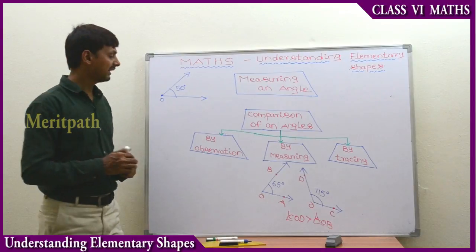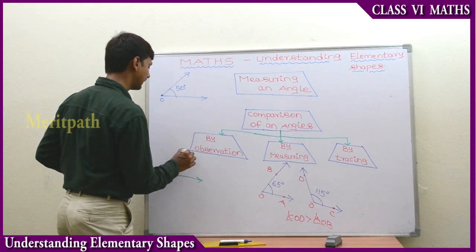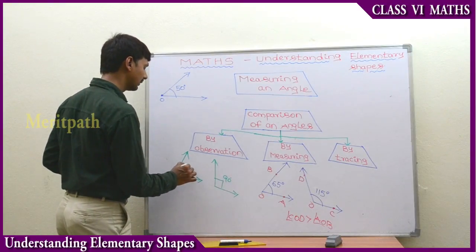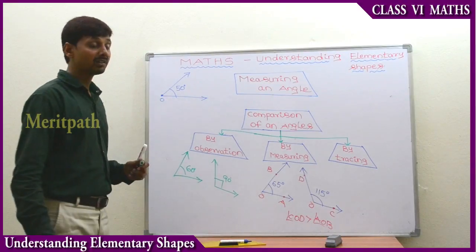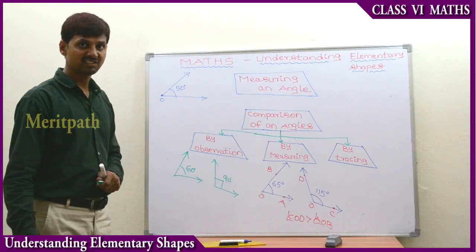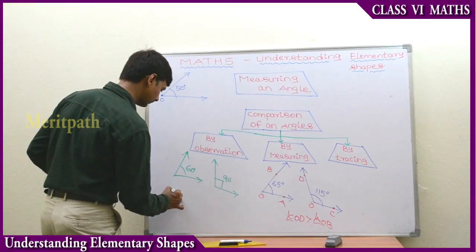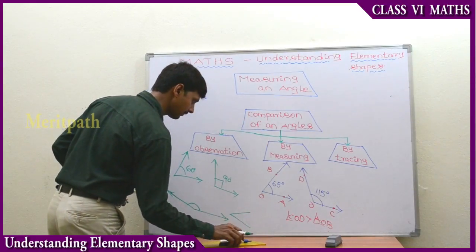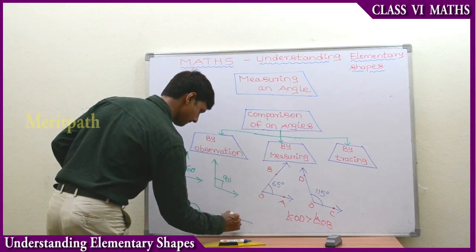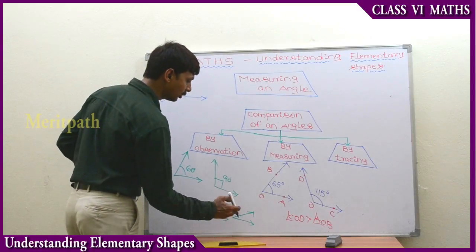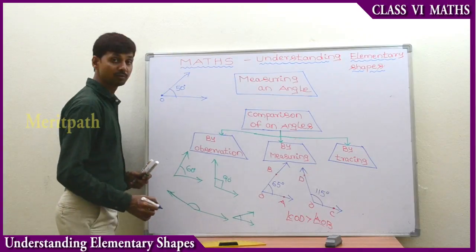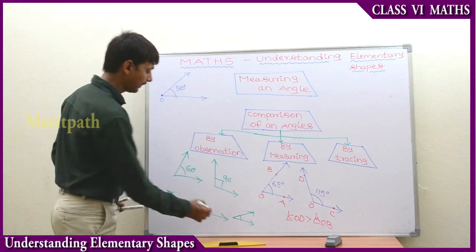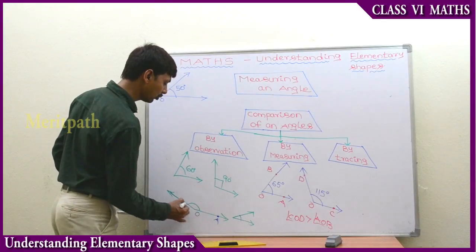So by observation, we can see the angles. This is an acute angle and this is a right angle. We can say the acute angle is less than a right angle - by observation this may be 60 degrees. So by observation we can say the right angle is greater than the 60-degree acute angle. Here also we can observe: this is an acute angle and this is an obtuse angle. By observation we can say this angle AOB is greater than angle COD.